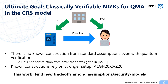The ultimate goal is to construct classically verifiable NIZKs for QMA in the common reference string model. So far, there is only a heuristic construction and no known construction from standard assumptions. Thus, existing works rely on stronger setup models than the common reference string model. The motivation of this work is to find new trade-offs among assumptions, security, and models for classically verifiable NIZKs for QMA.